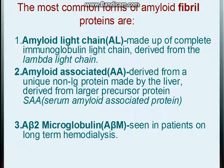The most common forms of amyloid fibril proteins vary according to the disorder. First is amyloid light chain (AL), which is made up of immunoglobulin light chains — specifically derived from the lambda light chain, which comes in kappa and lambda varieties. Second is amyloid associated (AA), derived from a protein known as SAA, which is produced by the liver.